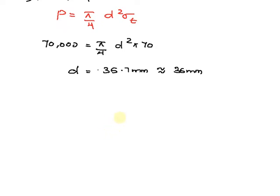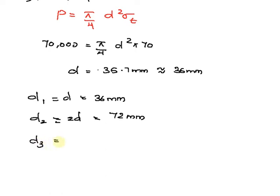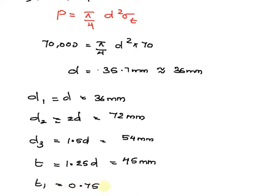So the other dimensions of the joint can be written as: the diameter of the knuckle pin d1 is equal to d, which is 36 millimeter. The outer diameter of the eye d2 is equal to 2 times d, which is 72 millimeter. The diameter of the knuckle pin head and collar d3 is equal to 1.5 d, which is 54 millimeter. The thickness of single eye or rod end t is equal to 1.25 times d, which is 45 millimeter. The thickness of fork t1 is equal to 0.75 d, which is 27 millimeter.